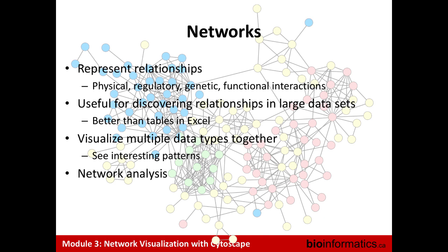Networks represent relationships, and it's a general type of data structure. The idea of relationships is very generic — you can imagine relationships in lots of different fields, and you want to understand how they work. People study these a lot in social networks, for instance, how people are connected. In biology, we tend to use networks for looking at molecular interaction networks or genetic interaction networks related to the cell. But you could also imagine cell-cell interaction networks related to tissues, or food webs in ecology.